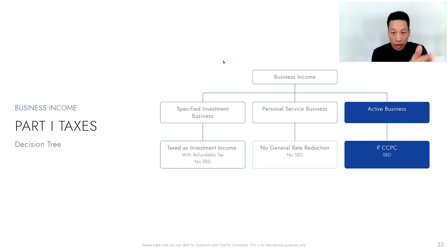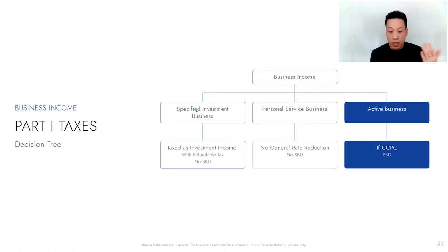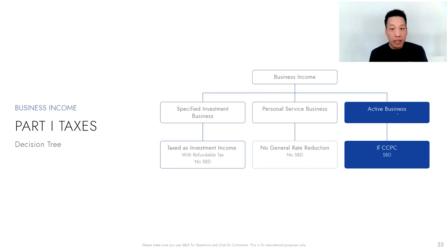If you are a contractor to only one company, there are specific tests that come into play — you may be considered a Personal Service Business even though you're offering a service, and you will not get the advantages of a specific tax rate. The first test is to make sure you don't fall into either category: Specified Investment Business or Personal Service Business. The last category — what everybody usually expects and wants — is that you have a set of activities through sale of product or services, qualifying as an Active Business, and as a Canadian Controlled Private Corporation (CCPC) you get access to what's called the Small Business Deduction.